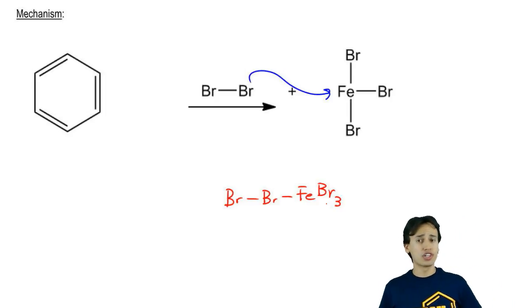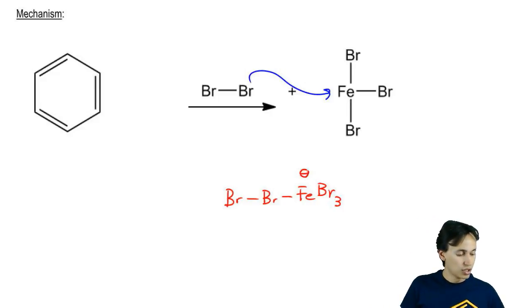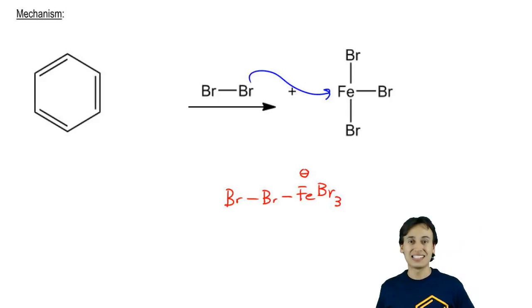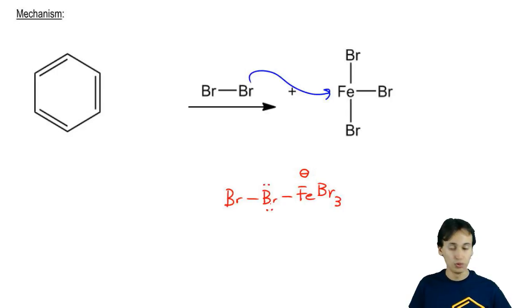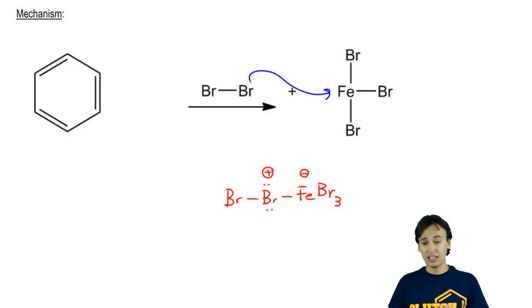Now are there any formal charges included in this molecule? Yeah. The iron was neutral before. It has an extra bond. That's going to get a negative charge. Bromine as we know likes to have seven valence electrons. Right now it only has six because it has two lone pairs. Two bonds, two lone pairs. That's going to get a positive charge. It's missing a valence electron.